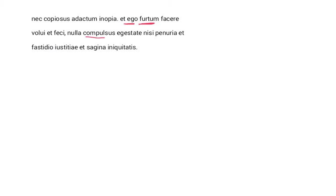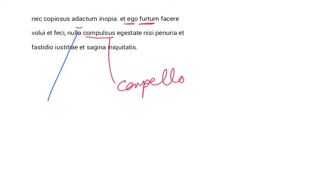Now, ego has a modifier, namely compulsus. What kind of an 'I' was he? Augustine says he was one compulsus — driven. This is a participle from the verb compello, a third conjugation verb. Now we have an ablative of means: nulla egestate. He put a macron, or long mark, above the A to indicate that it is ablative, because all first declension ablatives in the singular are long — the final syllable A is long. Driven by no poverty, no need or scarcity — nulla egestate.